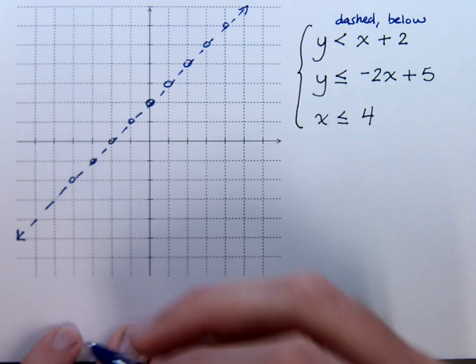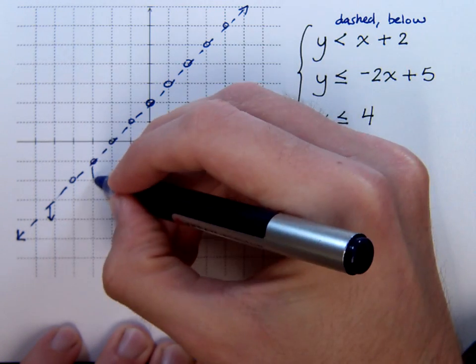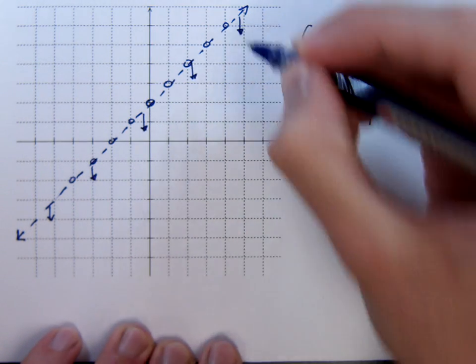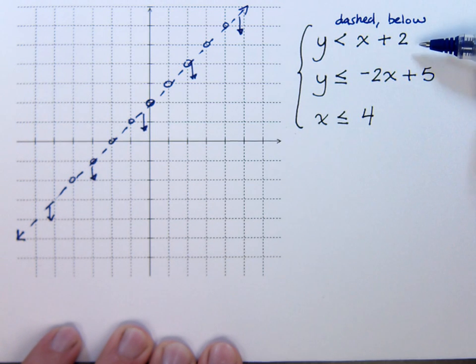Draw my dashed line going through these points and just make my notes that I need to be shading below, so just those little arrows below. That's all we really need. So here's the first inequality. Shouldn't be that big of a deal, right?